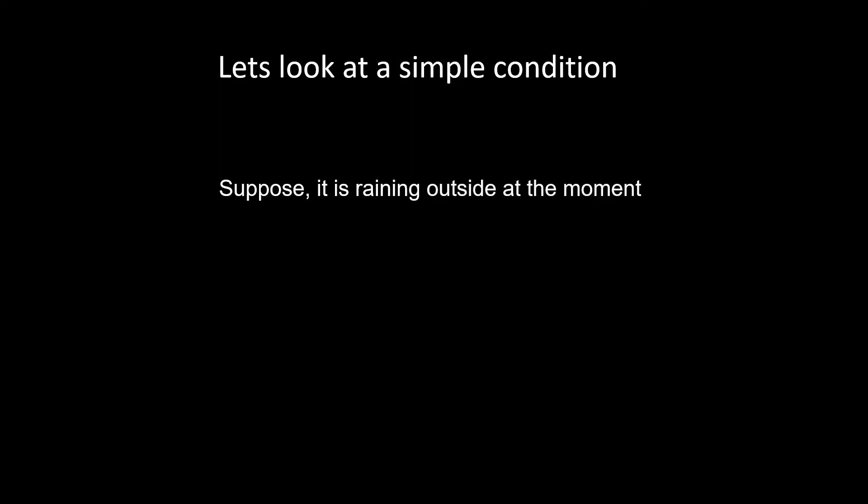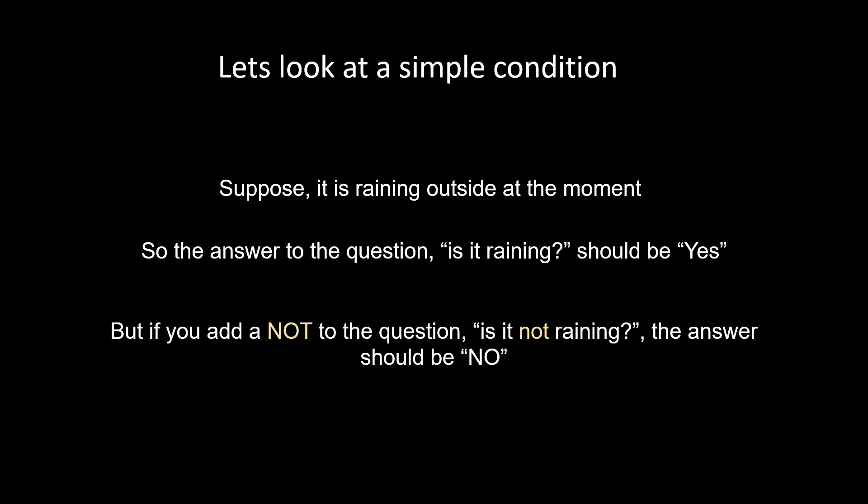Now moving on to the last of the basic logical operators, and this one's the easiest: the NOT operator. The NOT operator is the easiest to understand. It simply reverses the answer of a condition. For example, let's look at a simple condition. Suppose it is raining outside at the moment where I'm staying - it really is - so the answer to the question 'is it raining' should be yes. But if you add a NOT to the question 'is it not raining', the answer should be no. It simply reverses the answer of the condition if we add a NOT to the question.